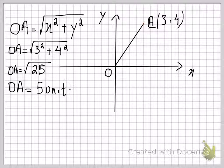Now this 5 units is the distance of the line OA. So that means that this point A is 5 units away from the origin.